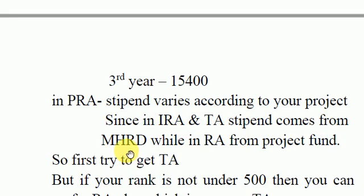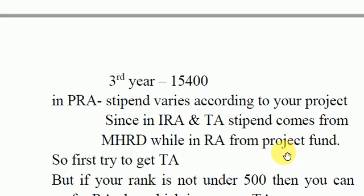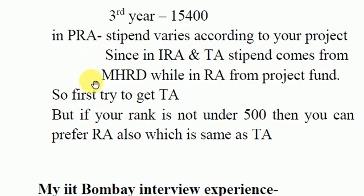In IRA and TA the stipend comes from MSRD, while in PRA your stipend comes from the project fund. If your project is funded by, say, the Tata Group or something similar, you will get more stipend — it can go up to 18K.